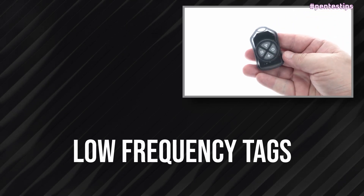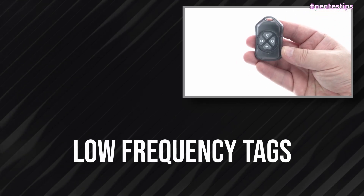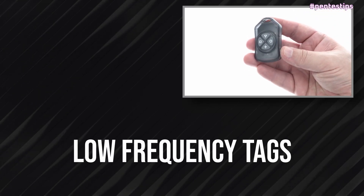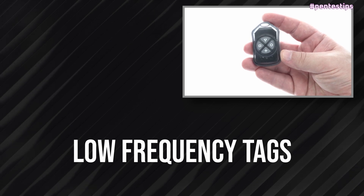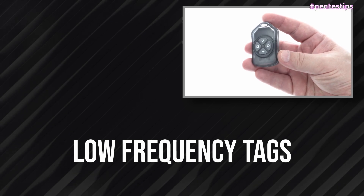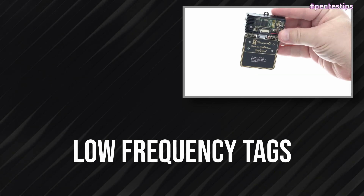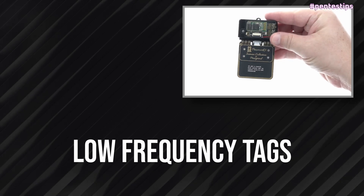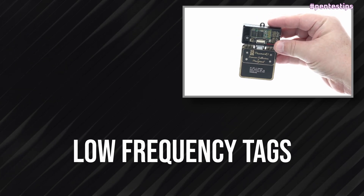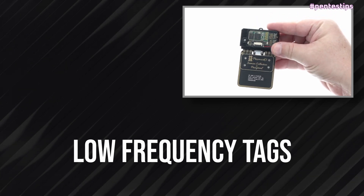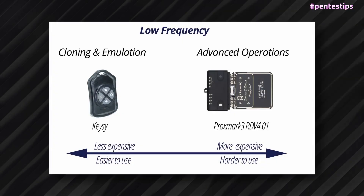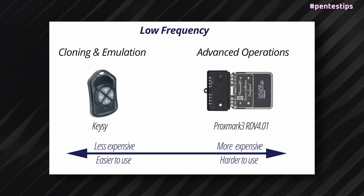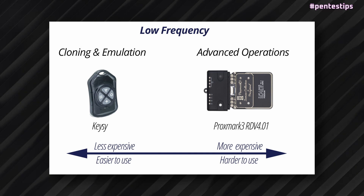For low frequency tags, if you need the basic operations — read, write, clone, and emulate — your best choice is the Kizi. If you need more advanced operations like demodulate, sniff, analyze, and low-level operations, your best choice is the Proxmark 3. Unsurprisingly, the tools that cater for more simple operations are easier to learn and use, and are also less expensive.